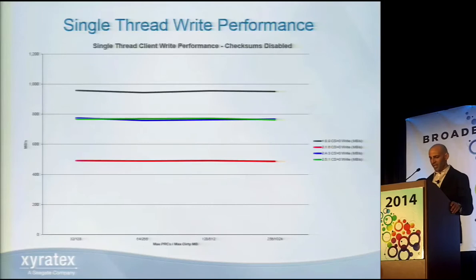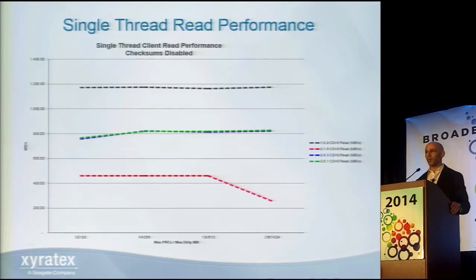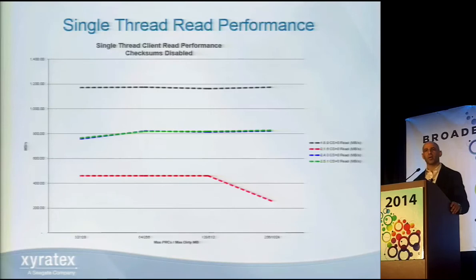Looking at read performance with checksums disabled, again 1.8.9 is at the very top and 2.1.6 is at the very bottom. 2.4.3 and 2.5.1 follow the exact same performance curves. Regardless of the RPCs in flight — because there's only a single thread — these represent the single thread performance of these client versions. The positive takeaway is that 2.4.3 and 2.5.1 vastly improved against their predecessor 2.1.6.